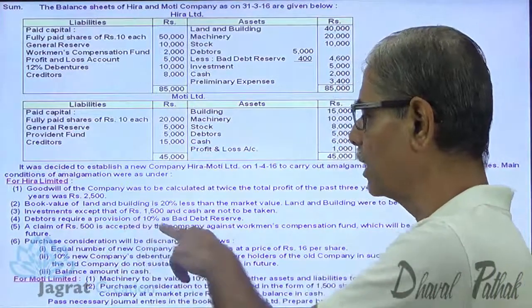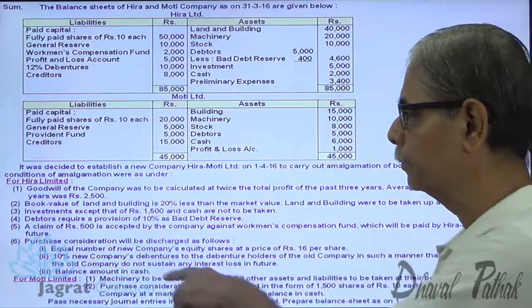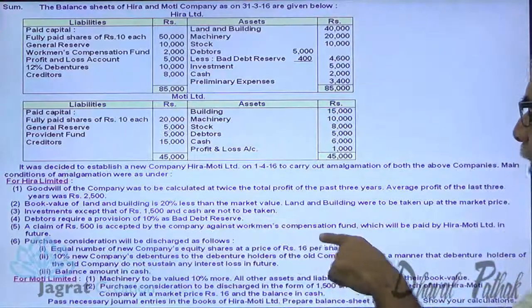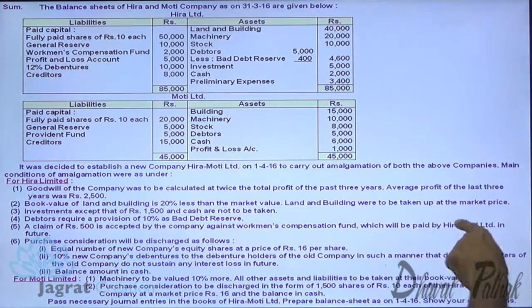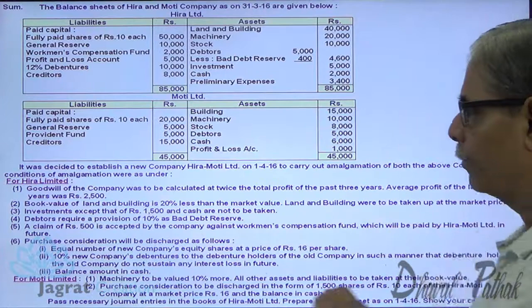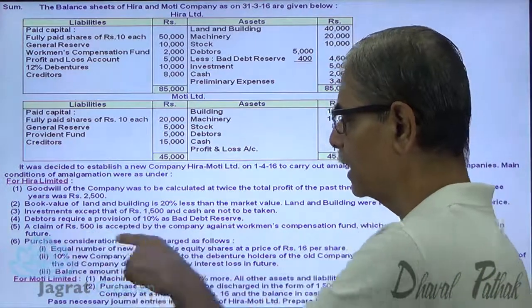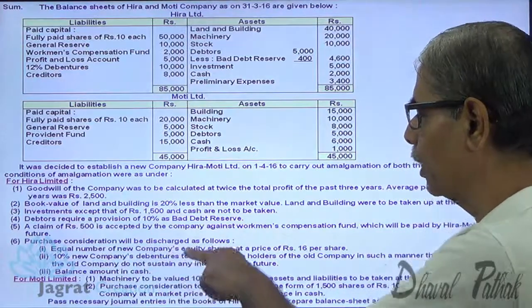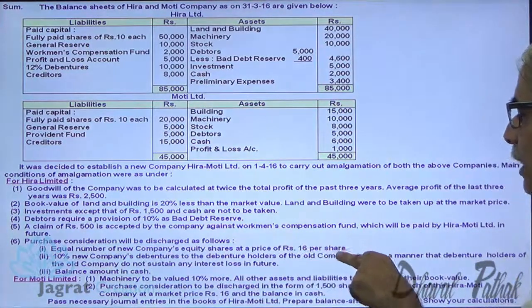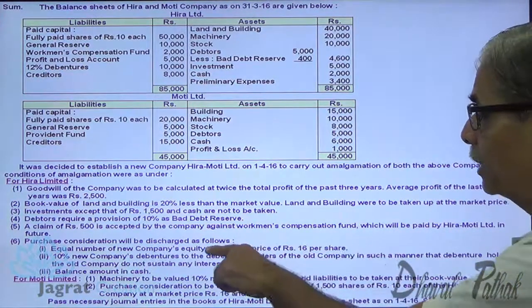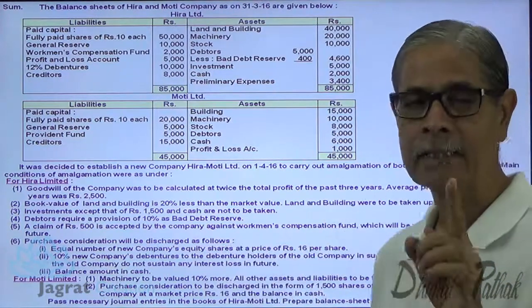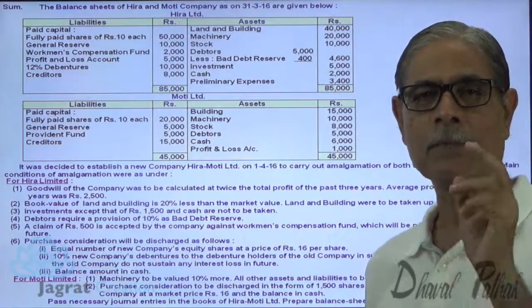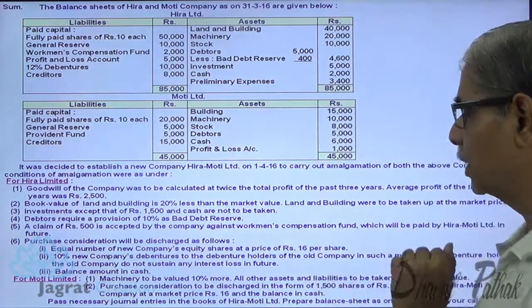Debtors require a provision of 10% for bad debt reserve. A claim of 500 is accepted by the company against the workmen compensation fund, which will be paid by Hira Muthi Ltd. in future. Purchase consideration was to be discharged as follows: equal number of new company's equity shares at a price of Rs. 16 per share is to be given — this is the exchange price of the purchaser's share.